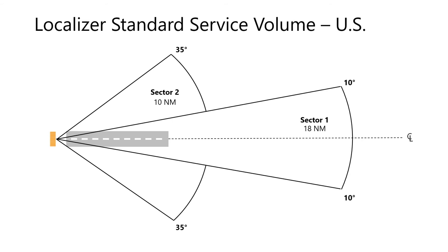Sector 1 is 10 to 10 degrees either side of centerline at a distance of 18 nautical miles. Sector 2 provides coverage from 35 to 35 degrees either side of centerline at a distance of 10 nautical miles.